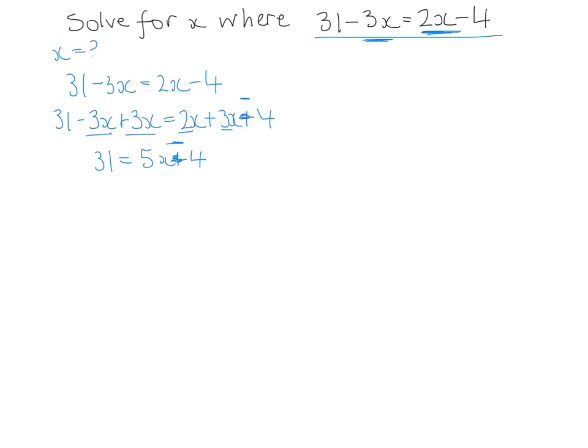Okay, so if we have 31 is equal to 5x minus 4. Now I'll write it around this way: 5x minus 4 is equal to 31.